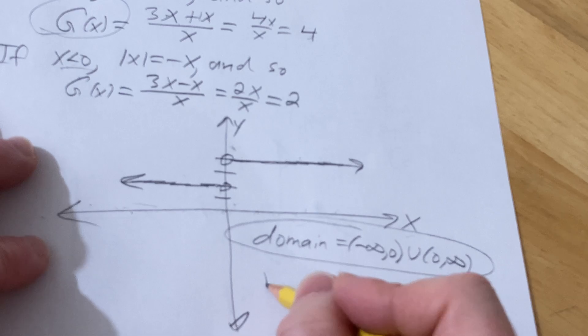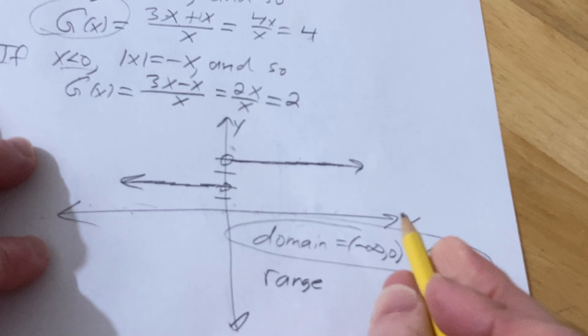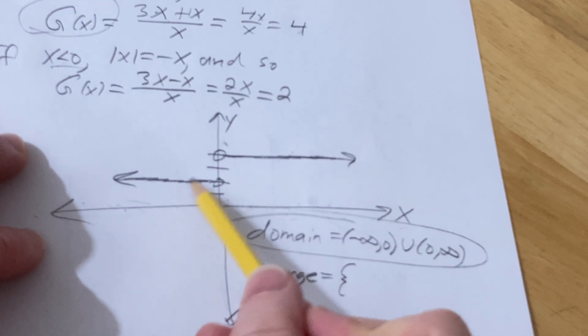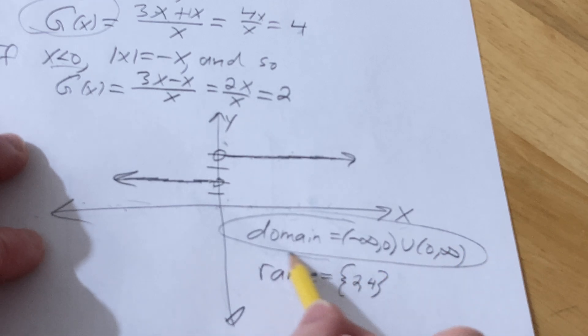The range is a little more interesting in this problem. The range is all the possible y values. In fact, there's only two possible y values: 2 and 4. So it's the set containing the elements 2 and 4.